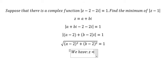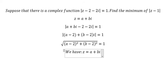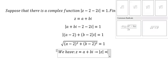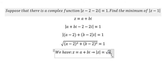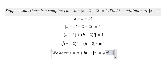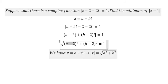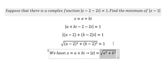Let's say we have z equal to a plus bi. If we put this inside the absolute value of z, we get the square root of a squared plus b squared. So here, a represents a minus 2 and b represents b minus 2, which is why we get that expression.